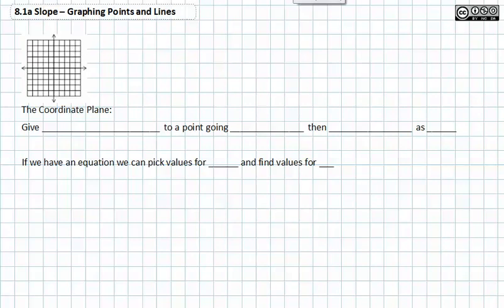In this video, we will be talking about graphing points and lines given a coordinate plane. This is a coordinate plane. It has a vertical axis and a horizontal axis. The horizontal axis is called the x-axis and the vertical axis is called the y-axis.